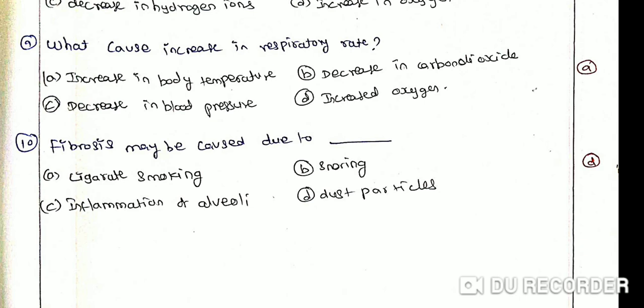Fibrosis may be caused due to dash. Option A: Cigarette smoking. Option B: Snoring. Option C: Inflammation of alveoli. Option D: Dust particles. The correct answer is option D, dust particles.